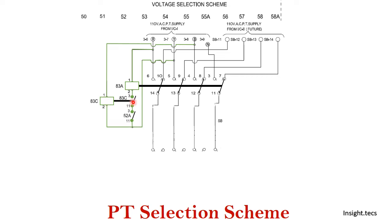83A is energized between R phase and Y phase. There are two switches here. First, whenever 83C is energized it will close this contact. And this is 52A — which is one of the auxiliary contacts of the breaker of incomer one panel. So whenever the breaker will be on, this 52A contact will be closed. This will energize 83A, and 83A will close the 83C contact. The circuit gets completed, after which we can see that PT for bus one will be selected.